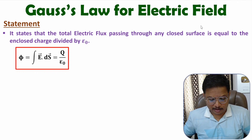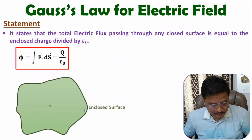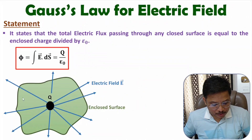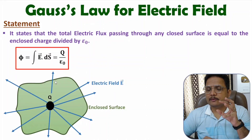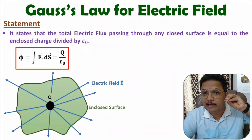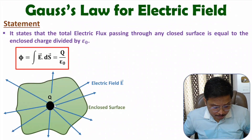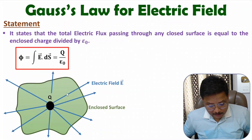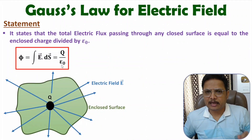Let me explain that graphically. Consider a closed surface with charge Q inside. Because of charge Q, there will be an electric field — shown here in blue. If you have a positive charge, electric field will emerge from it. For this enclosed surface, total flux — that is, electric field dot surface integration — is the charge enclosed divided by epsilon naught. That is the basic statement.